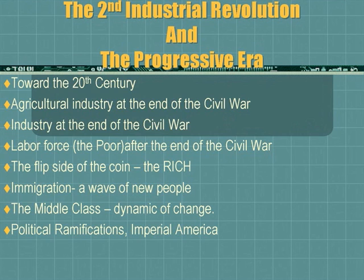Finally, we'll take a look at the political ramifications and the next step: Imperial America. As we go into the 20th century, the outgrowth will be an expansion of American values and political influence outside the United States. With that outline in mind, let's take a look at the southern economy and the economy of agriculture.